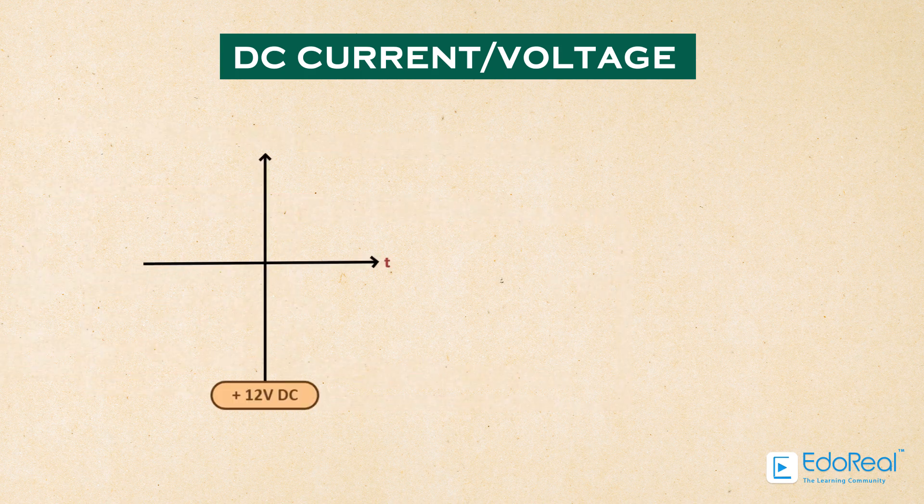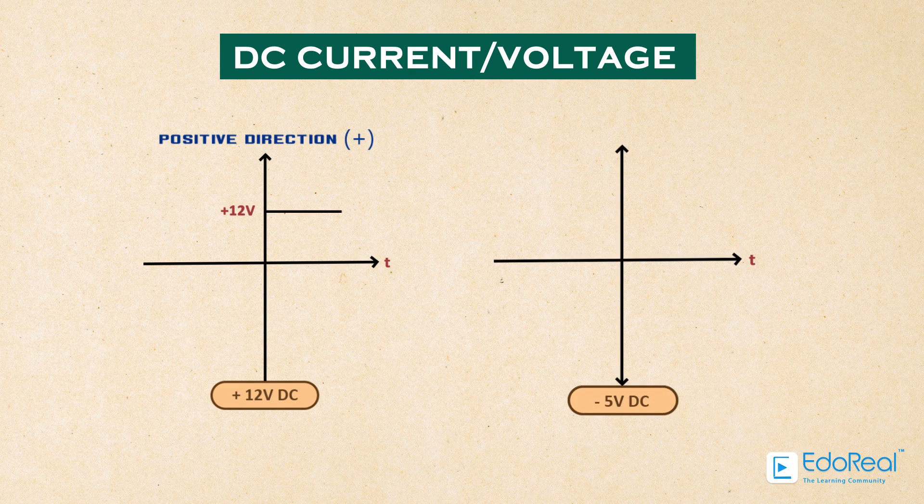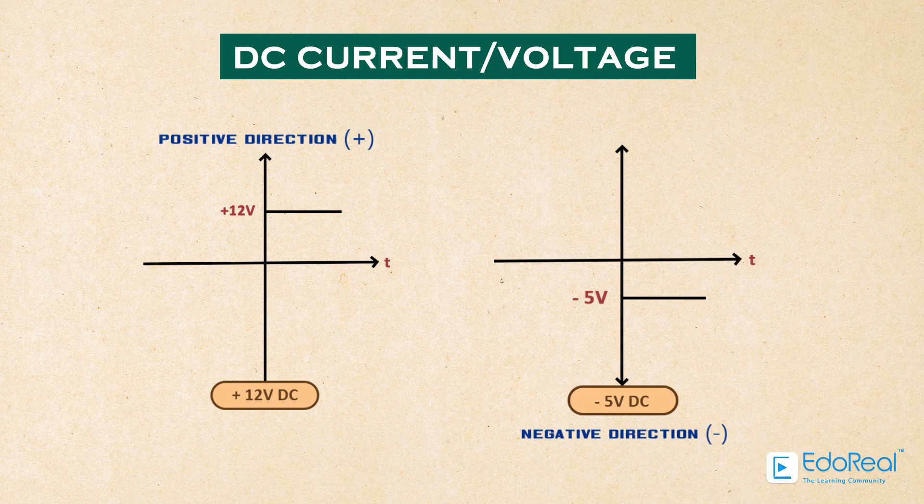For example, +12 volts DC current represents 12 volts of DC current in the positive direction, and -5 volts DC current represents 5 volts of DC current in the negative direction.